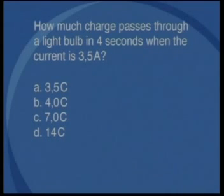Let's now look at some examples of using Q is equal to I times T. How much charge passes through a light bulb in 4 seconds when the current is 3.5 amperes? Will the answer be A, 3.5 coulombs, B, 4.0 coulombs, C, 7.0 coulombs, or D, 14 coulombs?